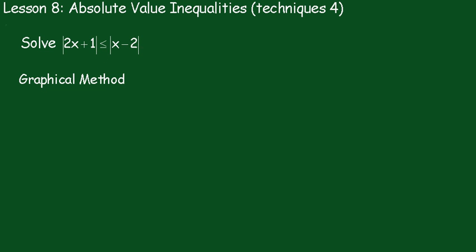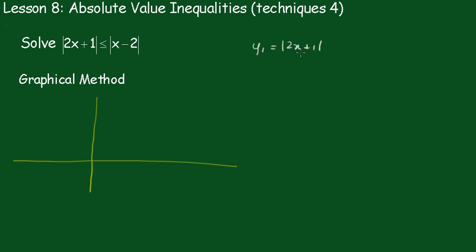So the graphical method — what we'll do is draw a little graph of these things first. The first one is y1 equals the absolute value of 2x plus 1. That'll be 0 when x equals minus one half, and it's fairly steep going up like that.